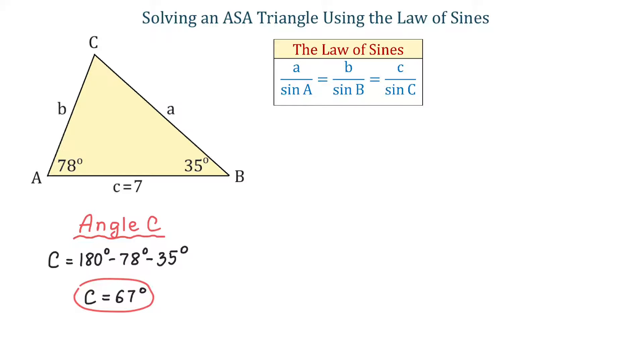Now, we can use the Law of Sines to find either side A or side B. I will start with side A. For this, I will need two of these three ratios.